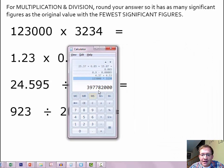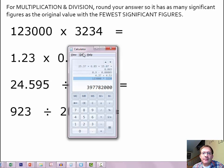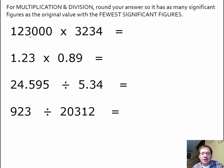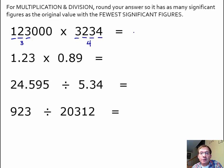If we look at that closely, there's no decimal point in the way it's written. Counting significant figures from the Atlantic side — starting with the first non-zero, which would be our 2 — there would be 6 significant figures in that answer as written. We're not permitted to have 6 significant figures. We can only have as many as the original value with the fewest. Back here, 123,000 — because the decimal point is absent — has just 3 significant figures. And 3,234, with the decimal point absent, has 4 significant figures. So our answer can only have 3 — the fewest.